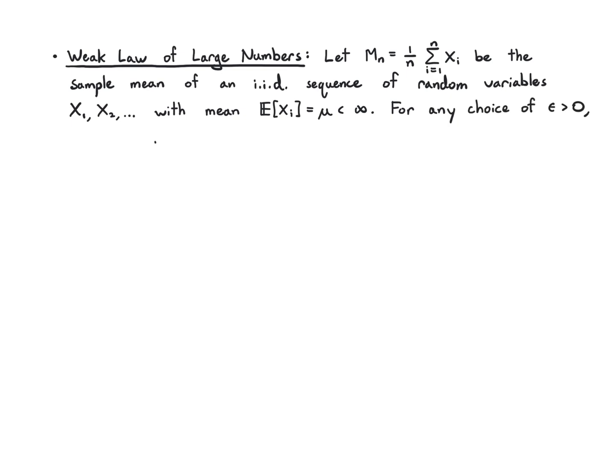So the weak law of large numbers says for any choice of ε greater than zero, then the probability that the sample mean minus the true mean is greater than ε, that goes to zero. So this probability of deviating from the true mean by more than ε for any choice of ε you like, that will eventually go to zero.